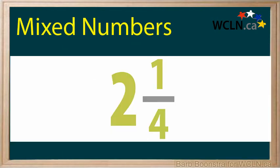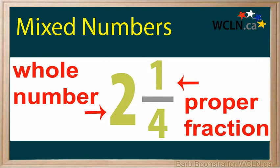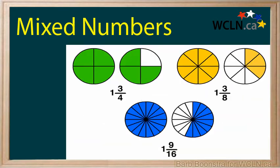A mixed number consists of a whole number and a proper fraction. For example, one-and-three-quarters: whole number one, proper fraction three-quarters. Other examples include one-and-three-eighths and one-and-nine-sixteenths.